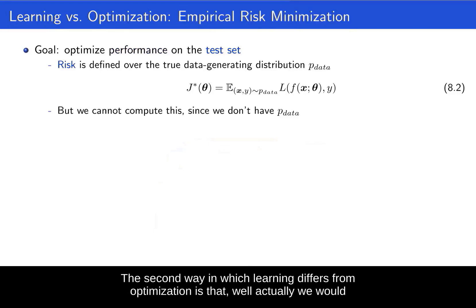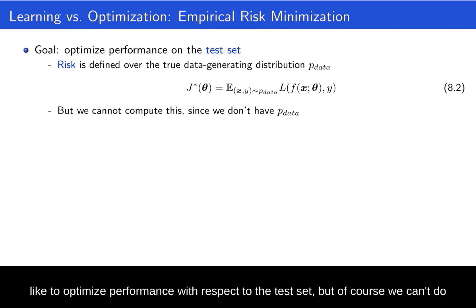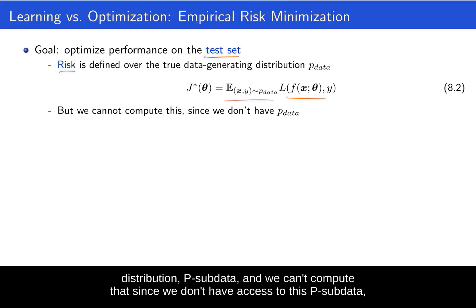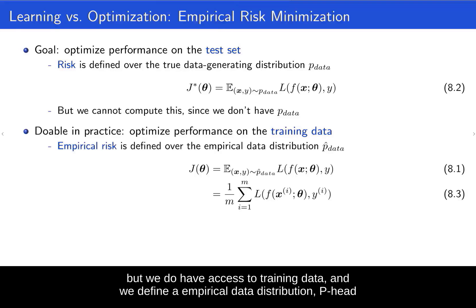The second way in which learning differs from optimization is that we would like to optimize performance with respect to the test set. But of course, we can't do that in optimization because we don't have access to the test set. So the risk that is defined as a loss in expectation over data coming from this true data-generating distribution, p_data, we can't compute that since we don't have access to this p_data.